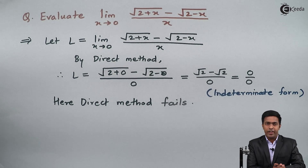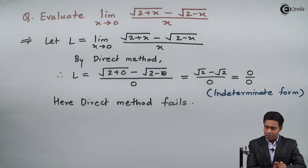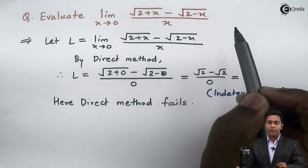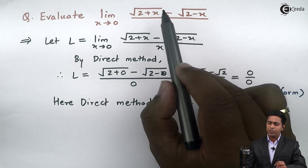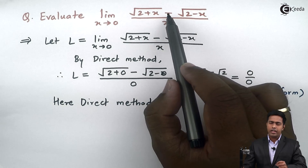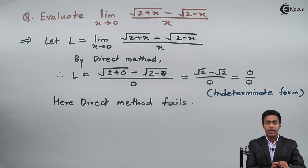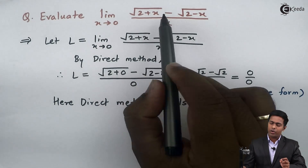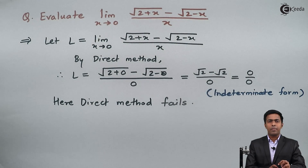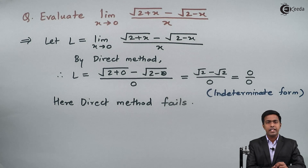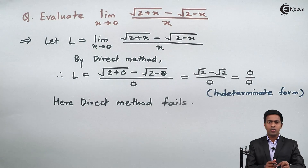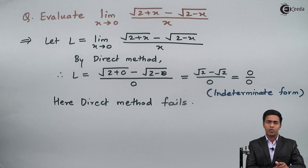Since direct method fails, we need to look for some other method to find the value of this limit. Observing the given function again, in the numerator we have two square root terms with a negative sign in between. Because of this we cannot apply any factorization formula — we have no formula to factorize square root terms. However, if we multiply with the conjugate, we can apply the method of rationalization, which will remove the square roots.